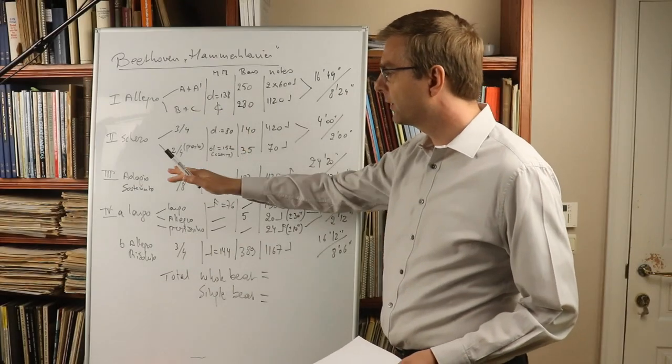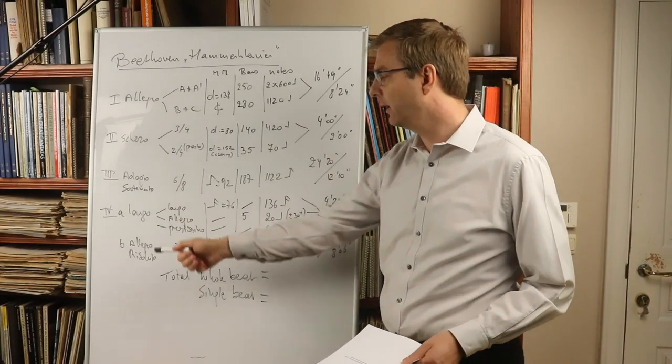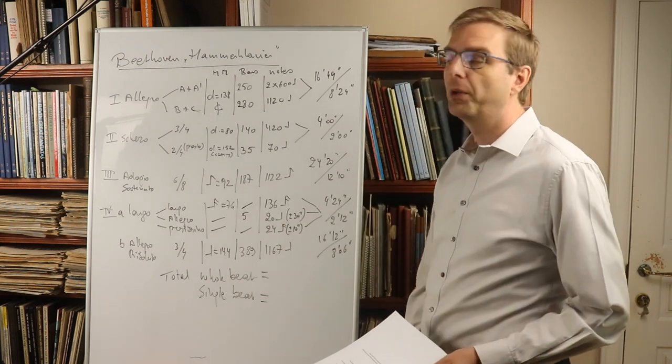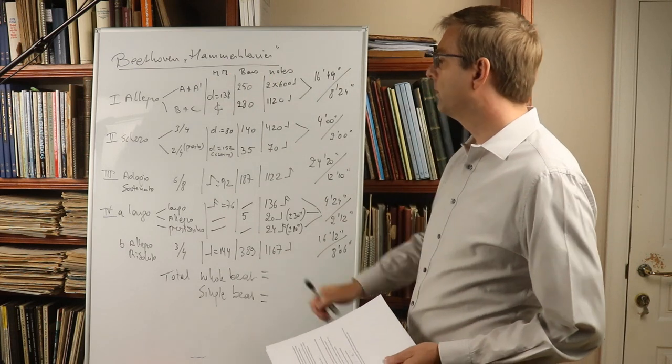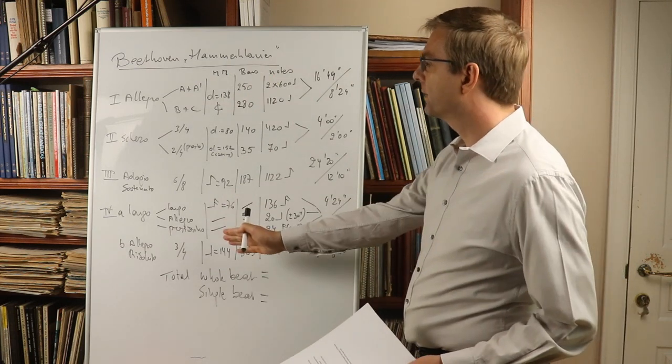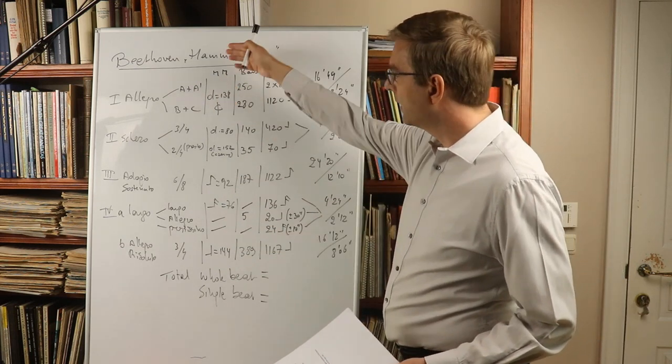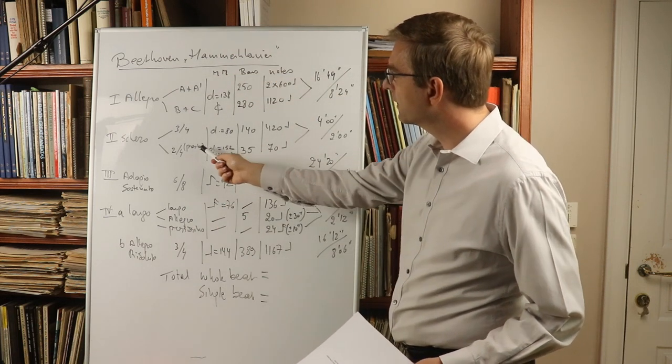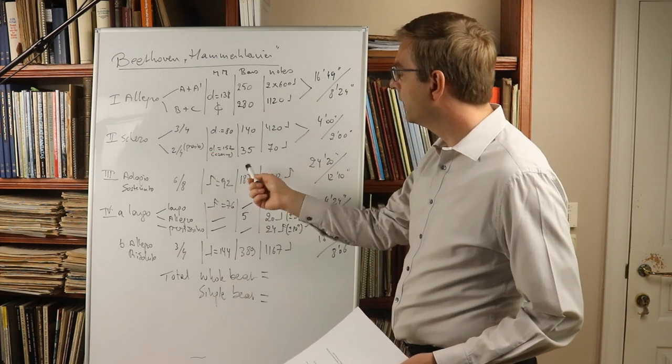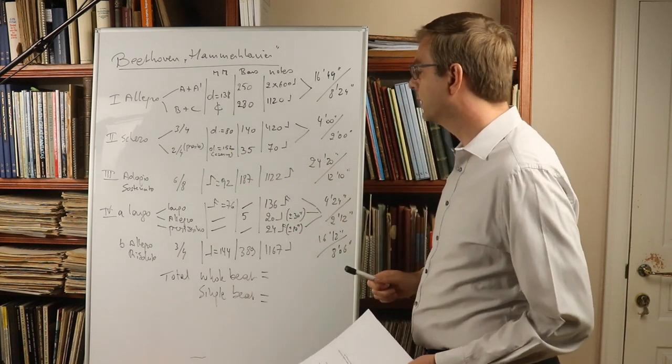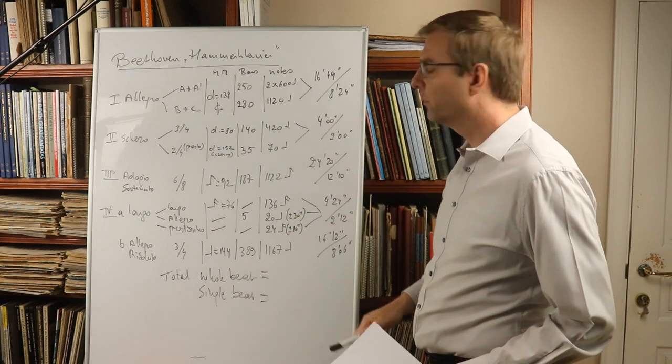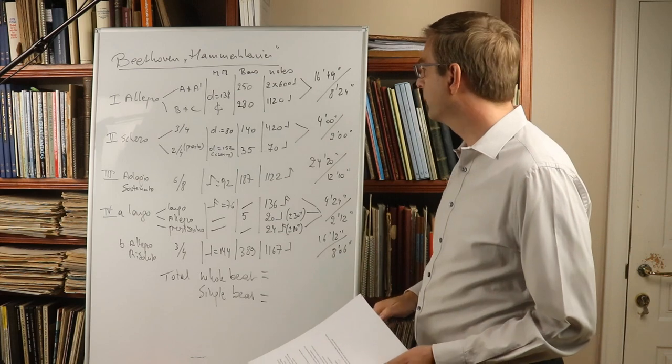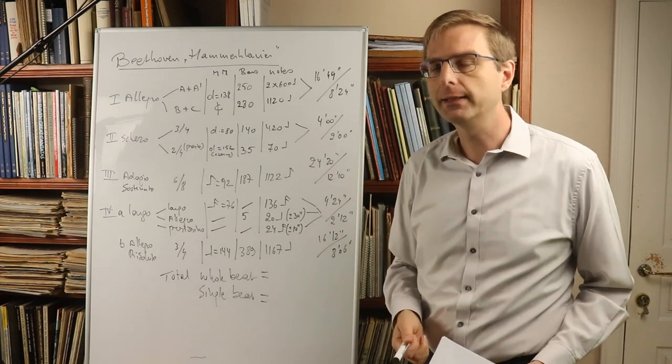So I have four movements: allegro, scherzo, adagio sostenuto, and the largo that's an introduction to the allegro risoluto, which is the famous fugue. I'm not going to read all of that, it's basically very simple. It indicates here the metronome mark. There's only one metronome mark that's by Czerny here, the prestissimo or presto, that's only 35 bars, 70 quarter notes. All the other metronome marks are by Beethoven. The number of bars, number of notes, and then you can multiply and divide, so you get the duration—that's not so hard to imagine.